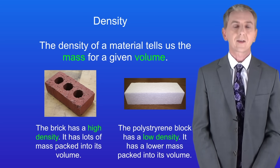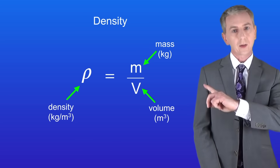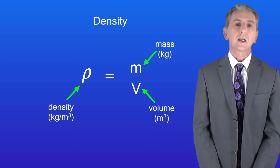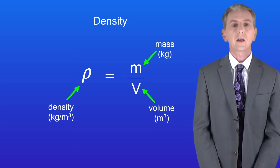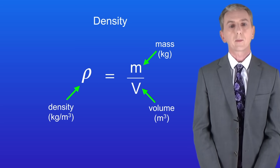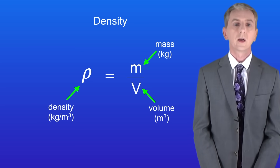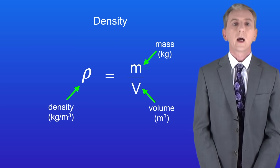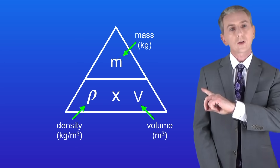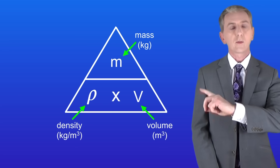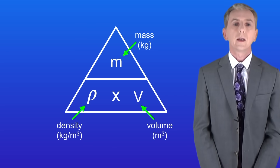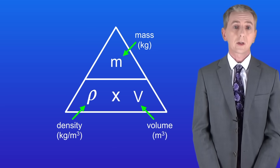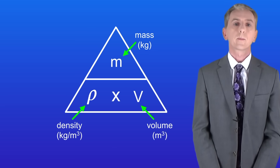We can calculate density using this equation: density equals the mass in kilograms divided by the volume in meters cubed. The unit of density is kilograms per meter cubed. Here's a triangle if you prefer to use those. You're not given this equation in the exam, so it's important that you learn it.